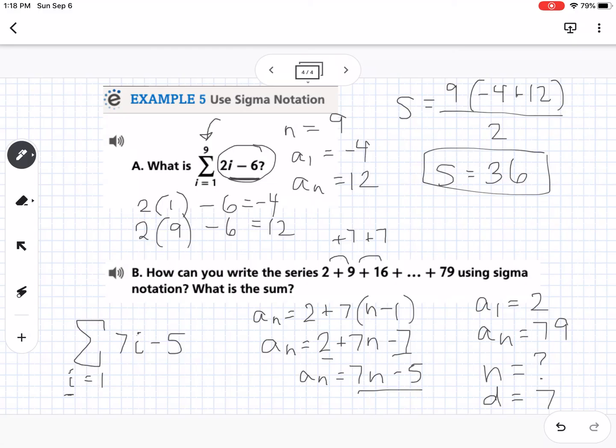Now I need to figure out what n is. We can figure out n by solving this. We know that the last term is 79. So I'm going to say that 79 equals 7n minus 5. What I'm doing is solving to figure out what term is equal to 79. We're going to add 5 to both sides, and we get 84 equals 7n. Then we're going to divide by 7, and we get 12. So that means 79 is the 12th term, which means on the top of our sigma notation, we put a 12, and that is how we'd write sigma notation for that series.